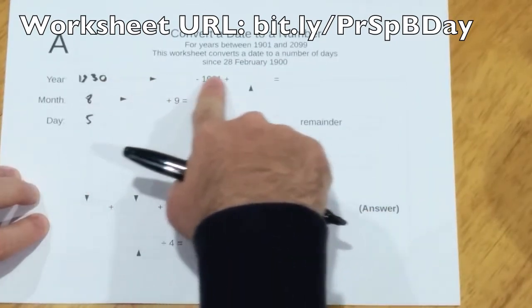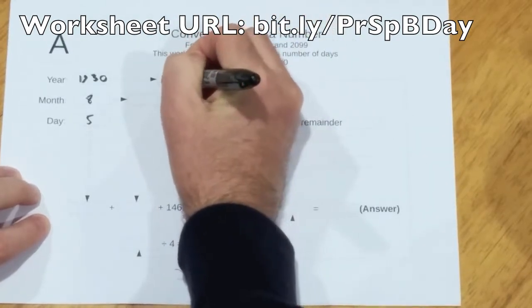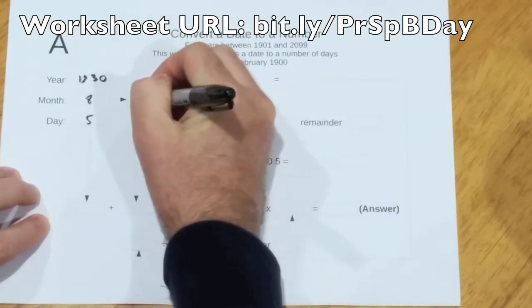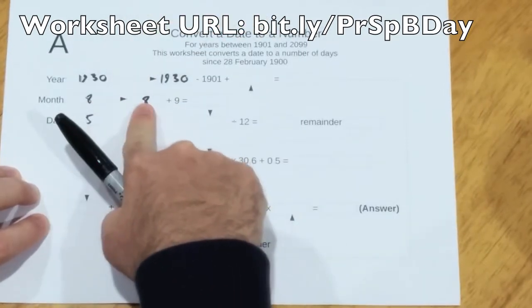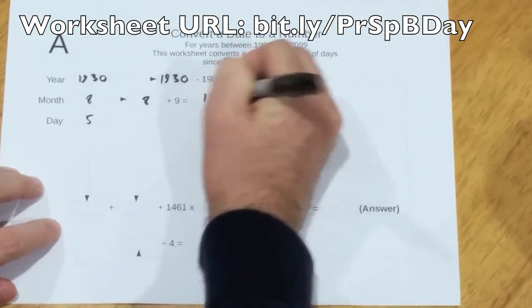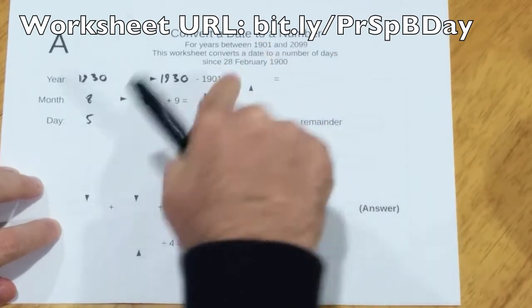We just follow the arrows, we copy numbers along the arrows, and any time we can, we do the calculations that are indicated. So 8 plus 9 is 17, and then we copy the answer down the arrow. 17 gets copied here.